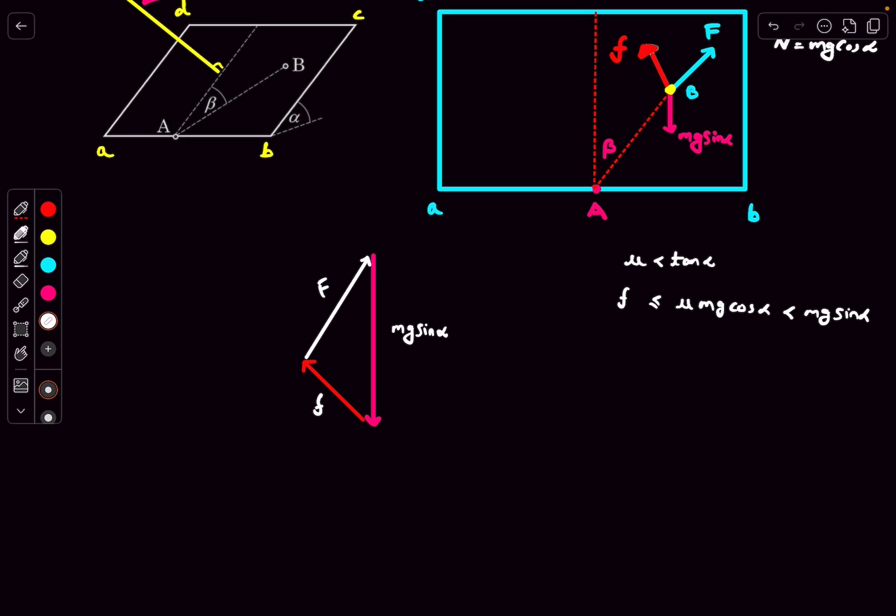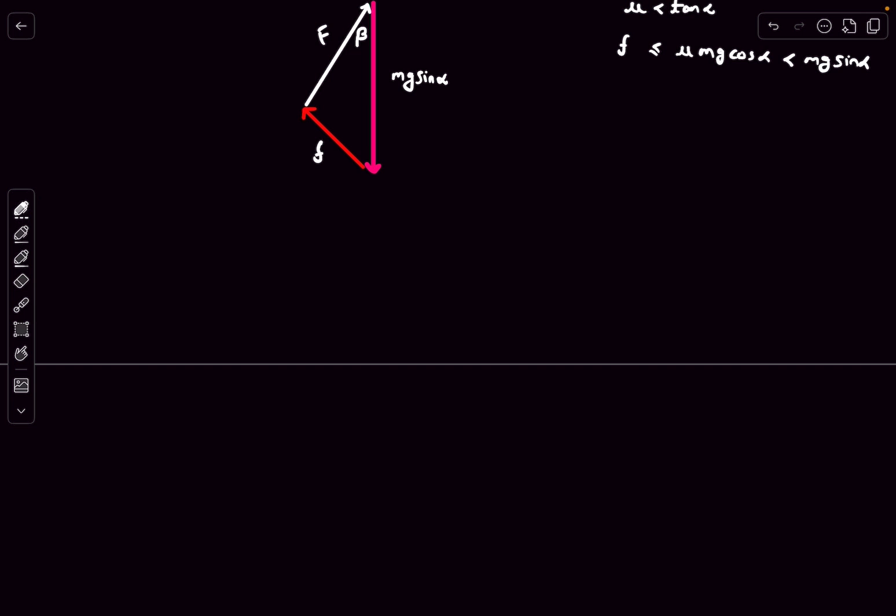The angle between F vector and mg sin alpha is also beta, so basically this angle is also going to be beta. Now, in order to represent the multiple possibilities that exist here, I'm going to draw a circle with dotted lines. Basically, the center of this circle is at the head of the mg sin alpha arrow, and its radius is small f. What this circle does is tells us about the different possibilities.